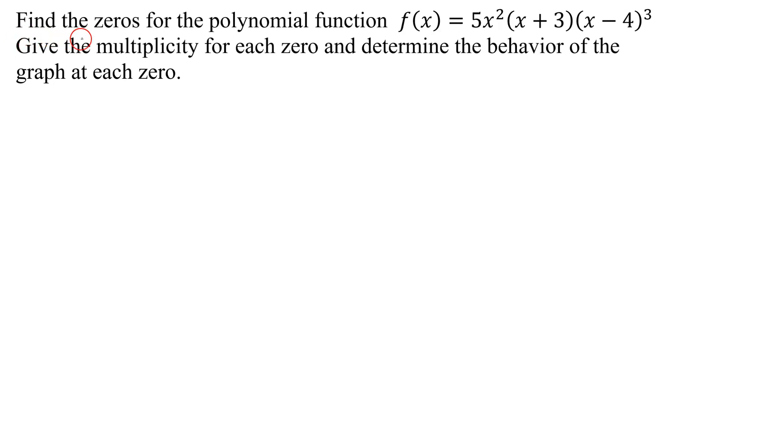In this problem, we need to find the zeros for the polynomial function f(x) equals 5x squared times x plus 3 times x minus 4 all cubed. We also need to give the multiplicity for each zero and determine the behavior of the graph at each zero.